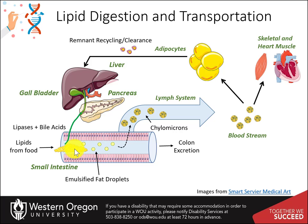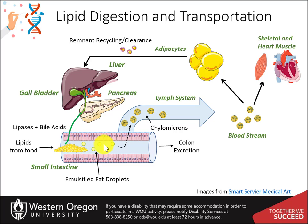When food is eaten, it travels to the small intestine, where much of the major macromolecules are digested to their building block components and absorbed by the intestinal epithelial cells known as enterocytes. Triacylglycerides from dietary fats are first emulsified by bile salts produced in the liver and delivered through the bile duct along with digestive enzymes produced in the pancreas. Pancreatic lipase then breaks down the tags into two fatty acids and a monoacylglyceride.